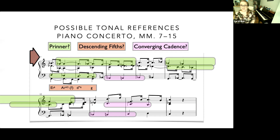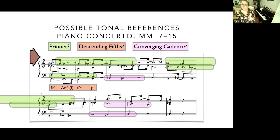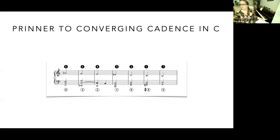What I've highlighted here are three possible ways of understanding this series of notes. The first is a Prinner — a type of musical schema I'll show on my next slide. Descending fifths is a type of musical sequence where we move around the circle of fifths — two chords that are a perfect fifth away from one another. There is also the idea of a converging cadence, which often approaches a chord by converging on it stepwise. Here is a more idealized version of a Prinner to a converging cadence, in the key of C minor.